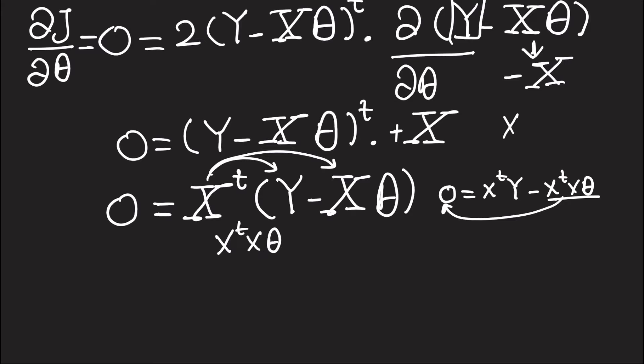But notice here we can't multiply both sides by X transpose inverse because X is not going to be a square matrix. But we can multiply both sides by (X transpose X) inverse from the left.